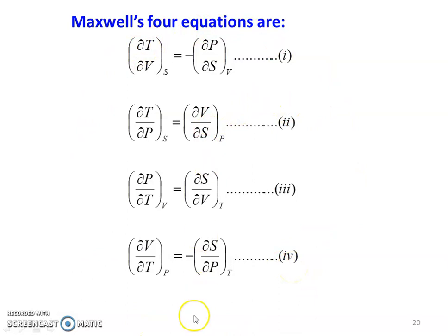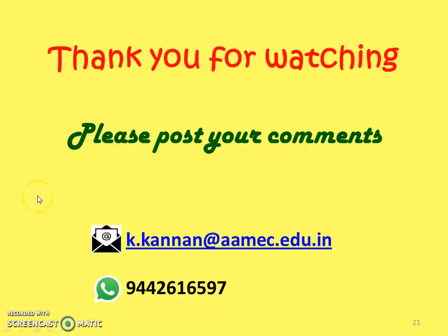In the four equations, you derive three in the four equations — so it is one of the important questions. Sometimes in university exams, derive the Maxwell's equation as part B, or write the Maxwell's equation as part A. You have to remember: use derivation theorem 1 and the four basic thermodynamic equations to write the Maxwell's equations. Thank you for watching. If you have doubts, contact me on WhatsApp and I will answer your questions. Next lecture we will continue the thermodynamic relations. Until then, bye.